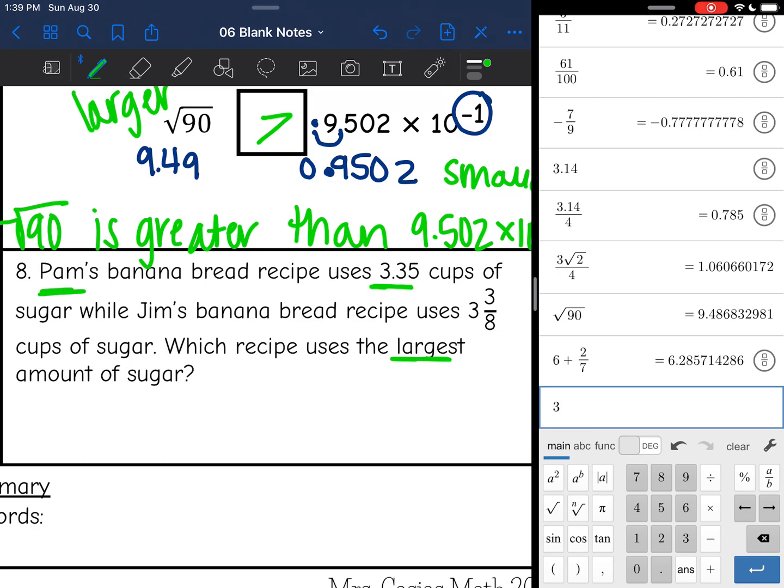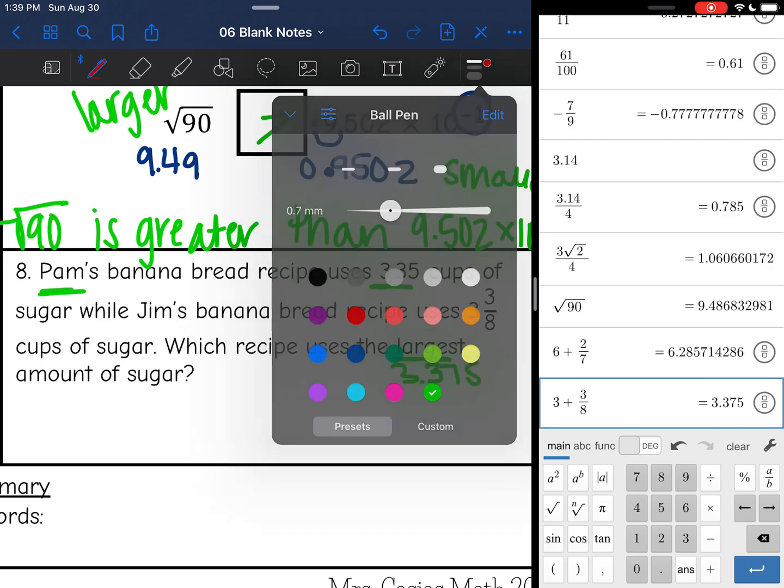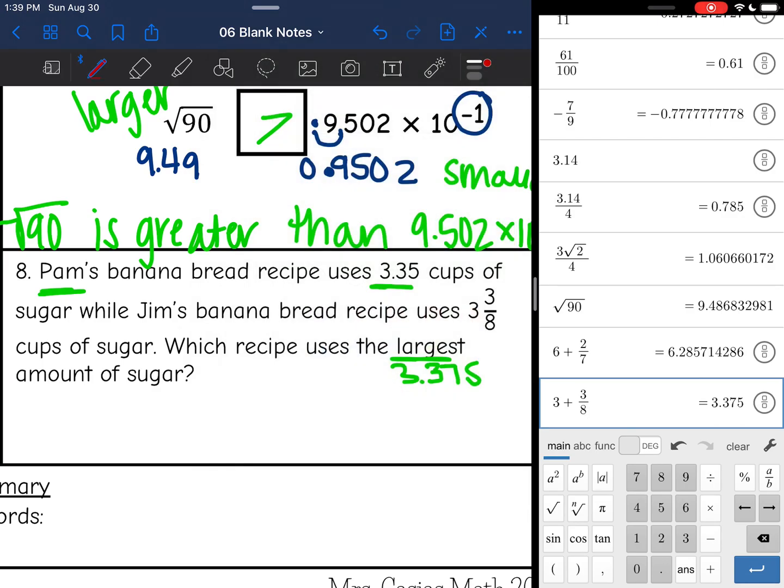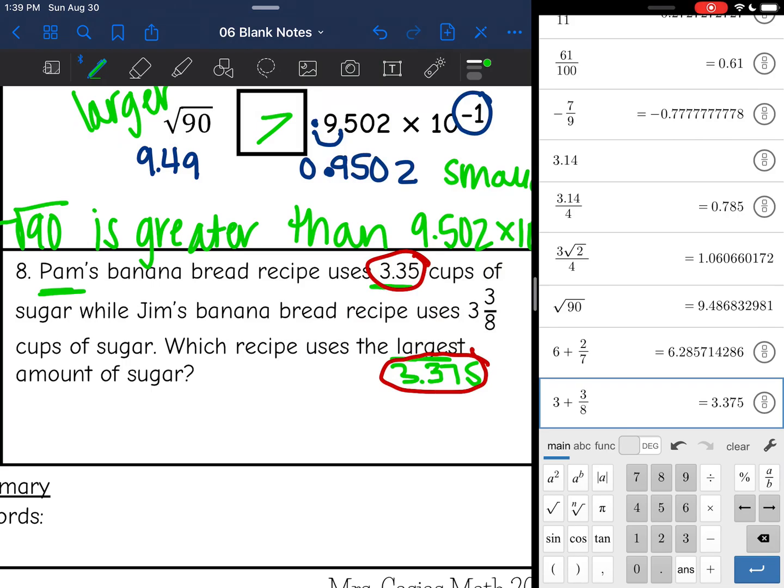So we need to do 3 plus 3 eighths. And he used 3.375. So this one is really close. Pam used 3.35, Jim used 3.375. So Jim barely used a little bit more. So this one would be Jim.